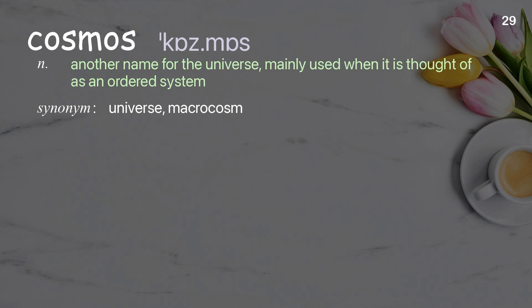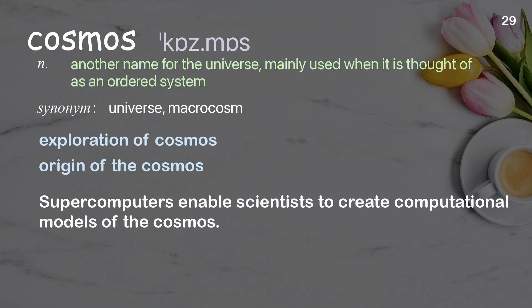Cosmos: Another name for the universe, mainly used when it is thought of as an ordered system. Examples: Exploration of cosmos. Origin of the cosmos. Supercomputers enable scientists to create computational models of the cosmos.